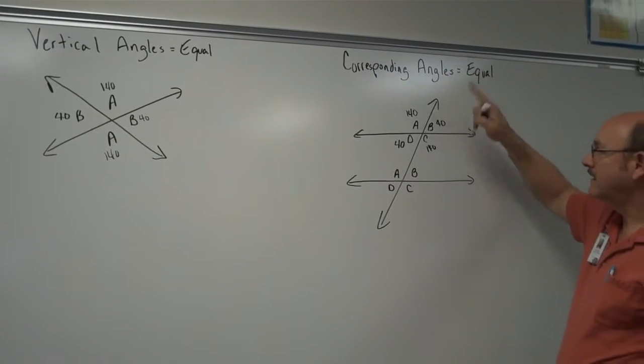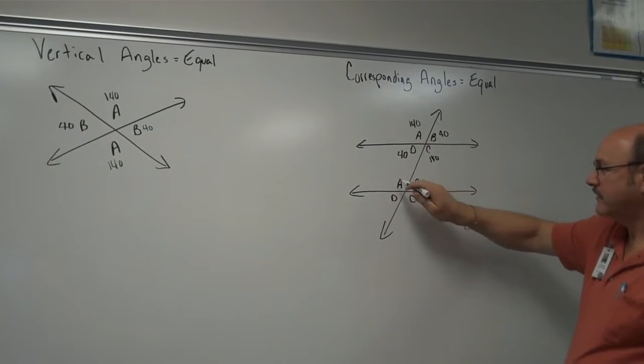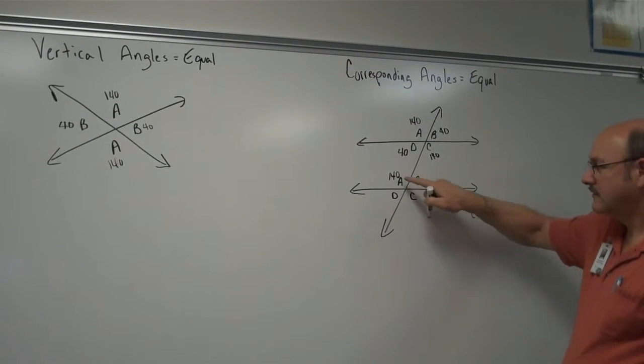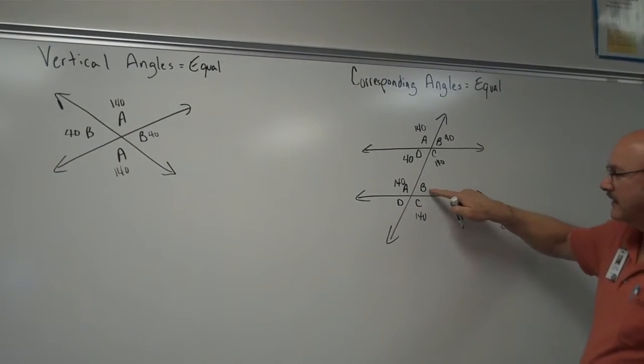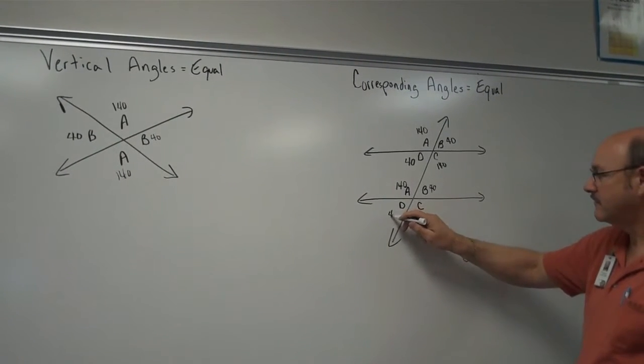Because of corresponding angles, if A is 140 up here, A is 140 down here. These are vertical, 140. If B is 40 up here, B is 40 down here. These are vertical, 40.